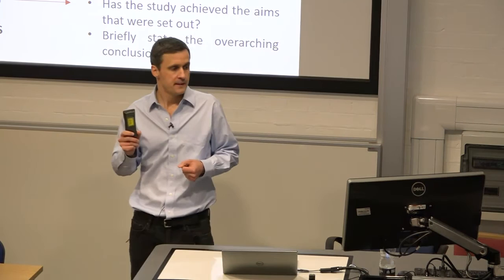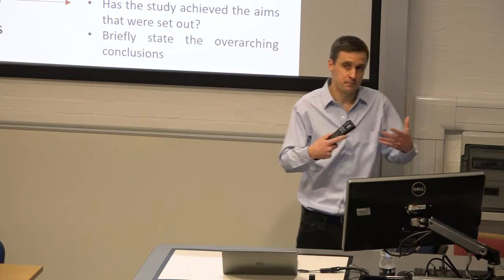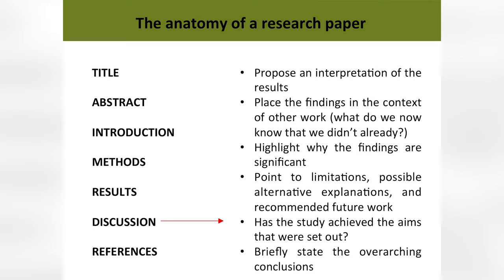In your discussion section, this is where you interpret what you've found. You would propose an interpretation of the results, and also place what you've found in the context of other work. Think back — you've set that up in your introduction, describing what we currently know. Now, having gone through your methods and results, you're saying: what have we found and how does that relate back to what the current studies show? Point to limitations — this is really crucial. What are possible alternative explanations? What are limitations of the work? What would you do in future work? And then concisely sum up: have you achieved the aims that you set out, and what are the overarching conclusions?